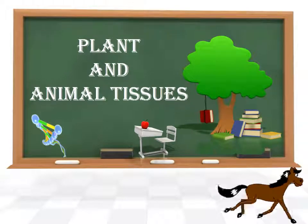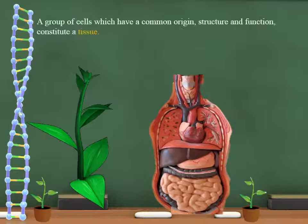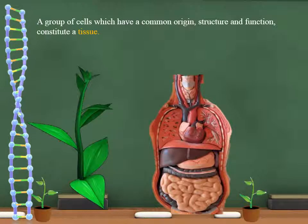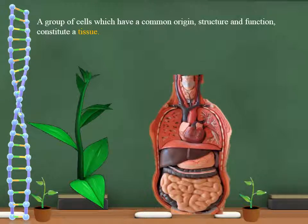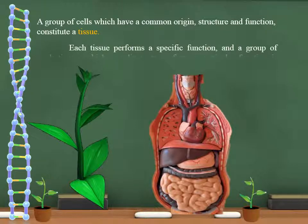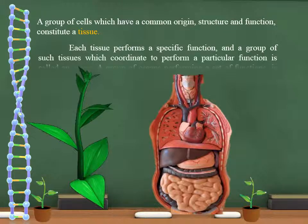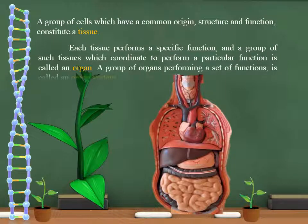Plants and animal tissues. A group of cells which have a common origin, structure and function constitute a tissue. Each tissue performs a specific function, and a group of such tissues which coordinate to perform a particular function is called an organ. A group of organs performing a set of functions is called an organ system.